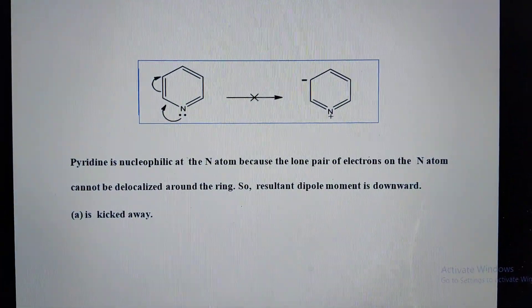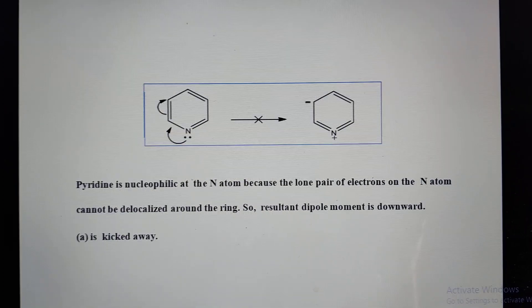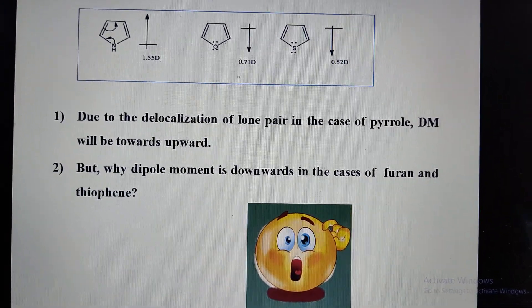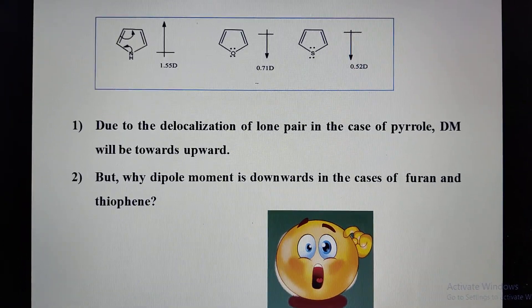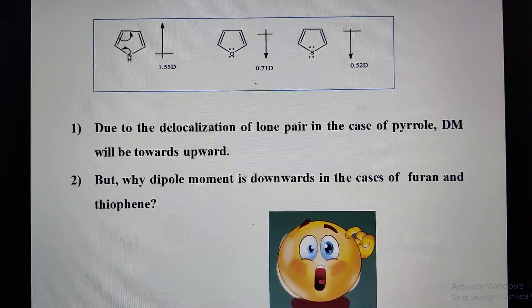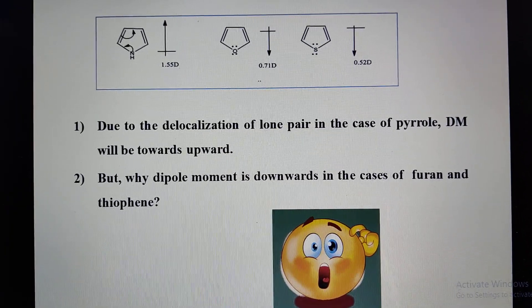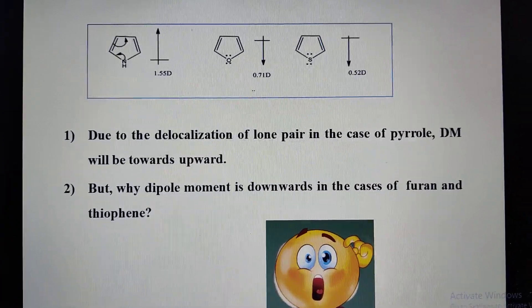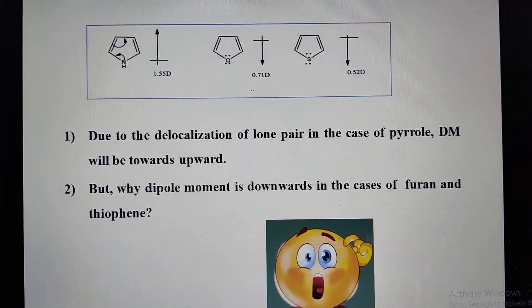Now in the case of pyrrole, due to the conjugation delocalization, the resultant dipole moment is upward. This is very normal case. But in the case of furan and thiophene, resultant dipole moments are downwards.